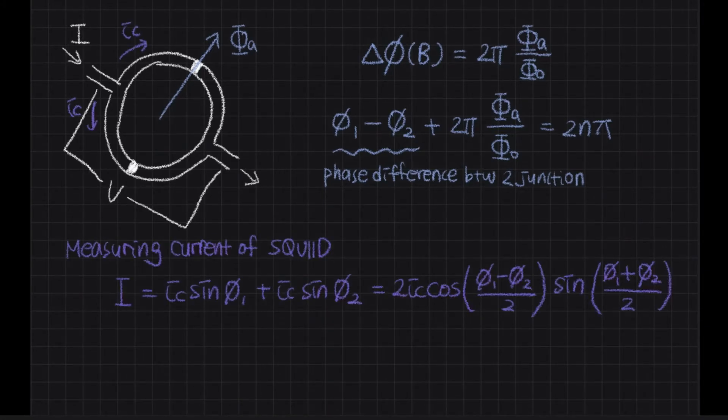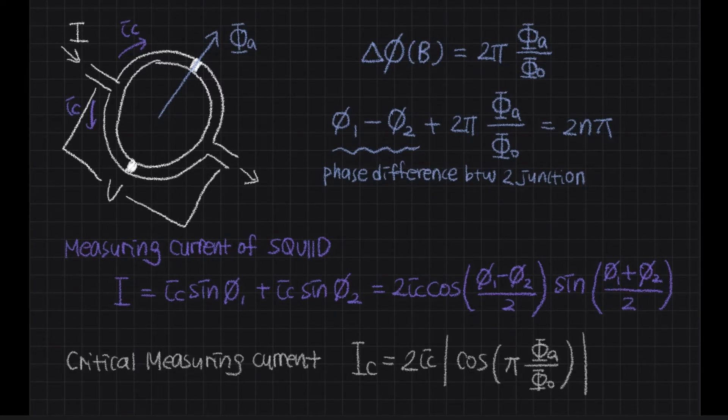The measuring current of SQUID is the sum of the current of each junction and that can be expressed like this. Using phase relation and trigonometric formulas, we can simplify the equation. Sine has a maximum value of 1, so the critical measuring current of SQUID is like this. It can be seen that there is a periodic dependence on the magnetic field.